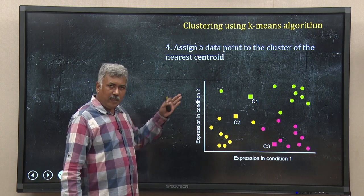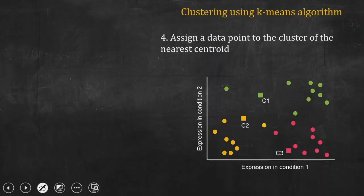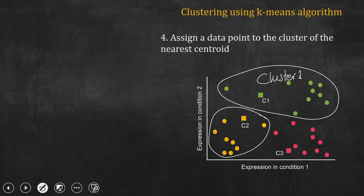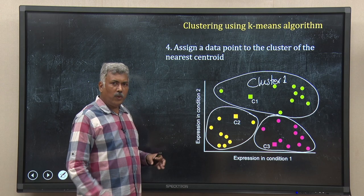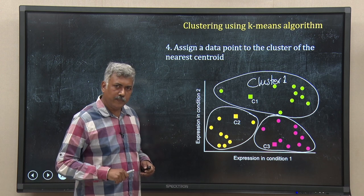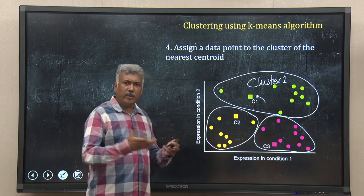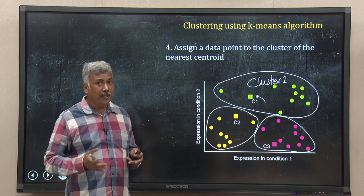In this way, my figure will change. All the green data points now belong to cluster 1 whose centroid was c1. Similarly, the yellow data points belong to cluster 2 because they are closest to c2, and the pink ones belong to cluster 3. So I have got 3 non-overlapping clusters. Now remember, c1, c2 and c3 were arbitrarily placed — they are not the correct centroids.